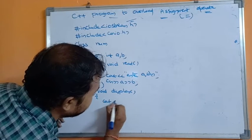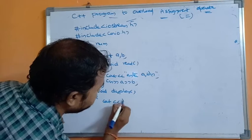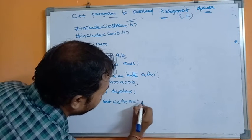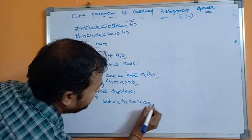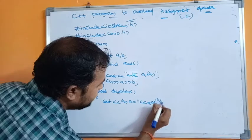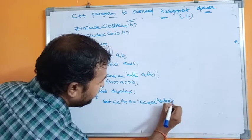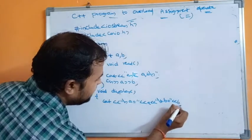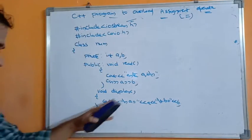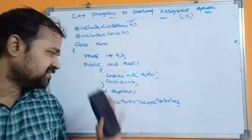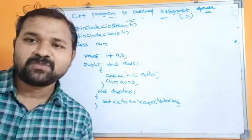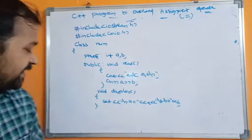So cout << "\nDisplay a value, a = " << a << "\t" << "b = " << b. Likewise, the display function is also defined. Now we have to define the operator function.